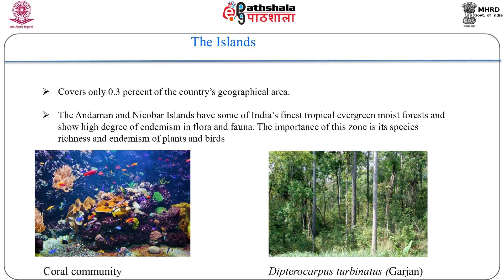The tenth zone is the Islands. Although this zone covers only 0.3 percent of the country's geographical area, it is nonetheless important from the biodiversity perspective. The Andaman and Nicobar Islands have some of India's finest tropical evergreen moist forests and show a high degree of endemism in flora and fauna. Because of the isolation of islands and their relatively small size, mammal fauna is poor, with most species being rodents. To summarize, India is a highly diverse country in terms of its topology, flora, and fauna, and these studies give us an idea of how to protect and conserve endangered and endemic wildlife and plant life.